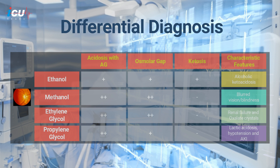Ethylene glycol intoxication is characterized by the presence of uranoxalate or hippuric acid crystals in the urine and acute kidney injury. Ethanol intoxication may be associated with positive ketones and alcoholic ketoacidosis, while propylene glycol intoxication is associated with lactic acidosis and is usually characterized by hypotension, acute kidney injury, and multi-organ system failure.